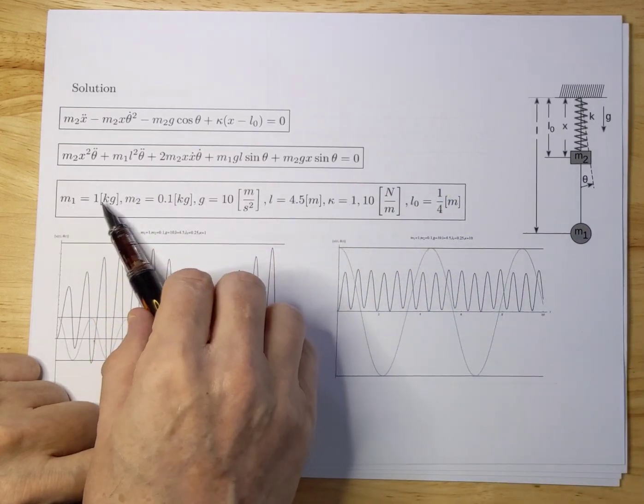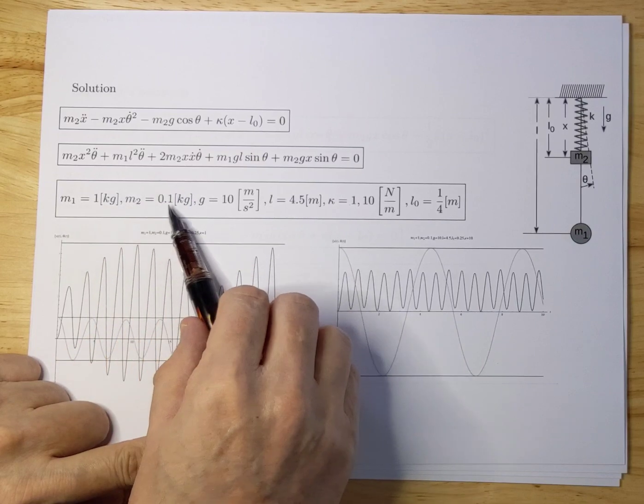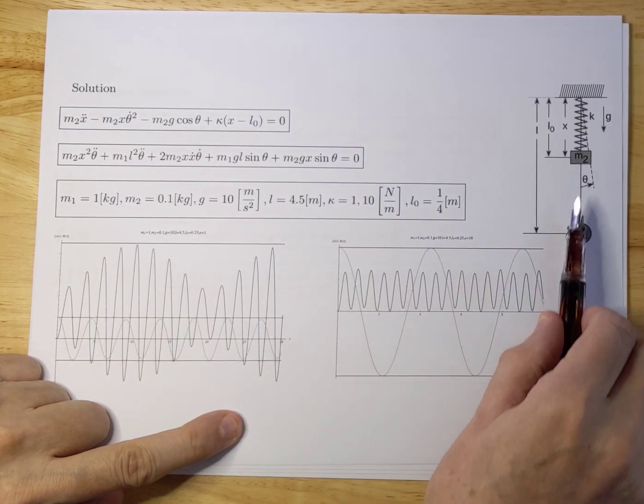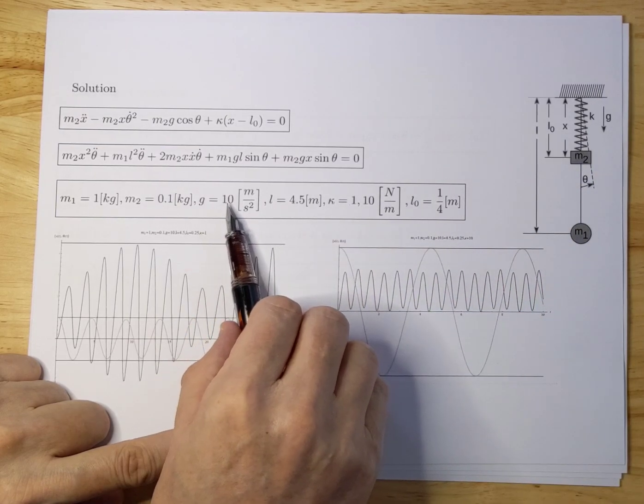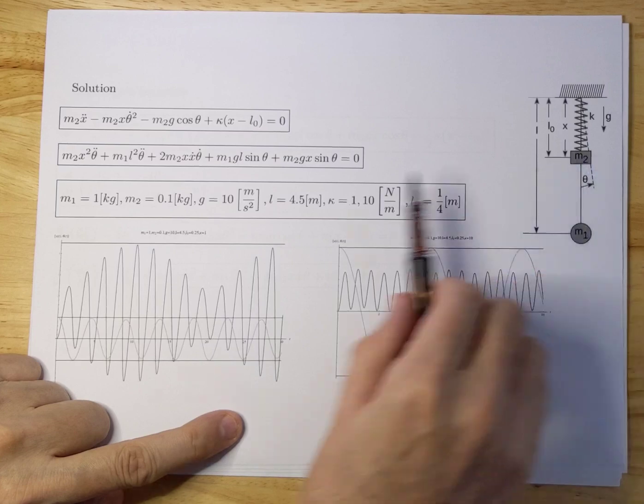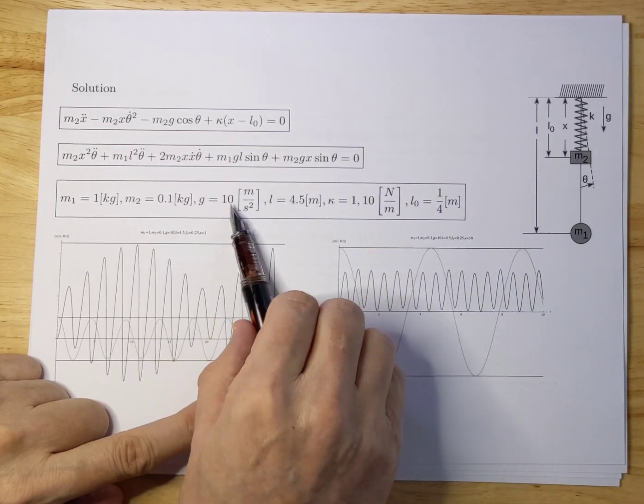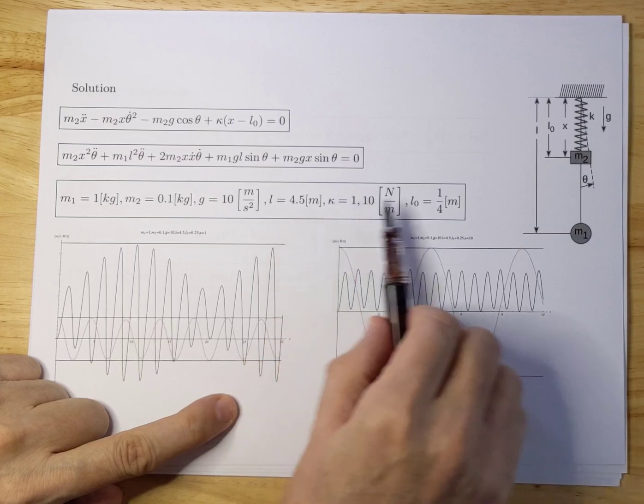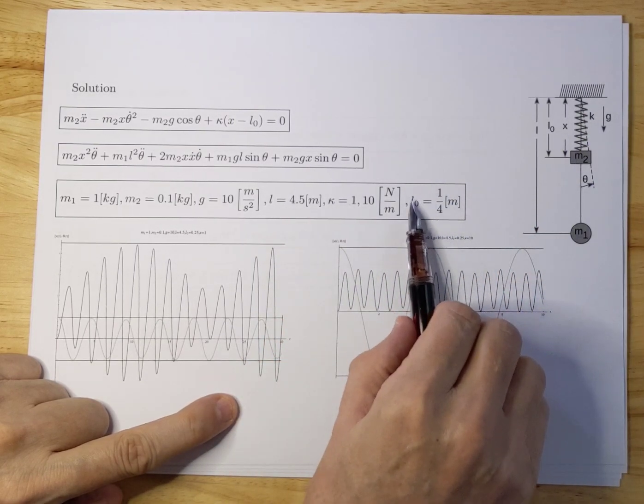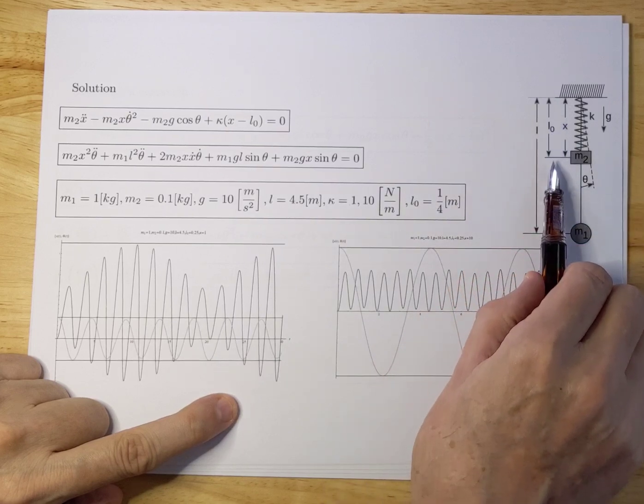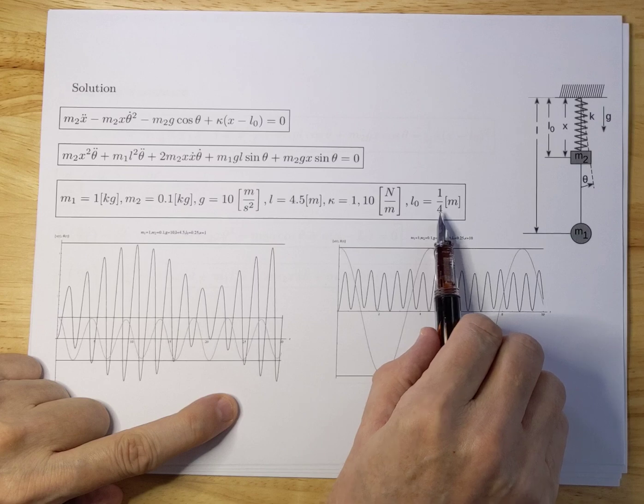I also assumed a number of values for the various parameters. For M1 I used 1 kilogram, for M2 I used 0.1 kilogram, so much smaller, an order of magnitude smaller than this one. I used g is 10, so I used 10 for that. You can use 9.81 if you want, I used 10. The L, the length of the pendulum, is 4.5 meters. I used L0, which is the sagging distance in equilibrium, I used that of 25 centimeters.